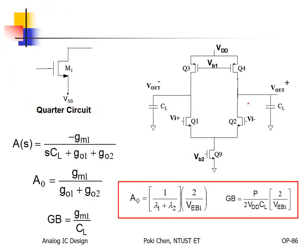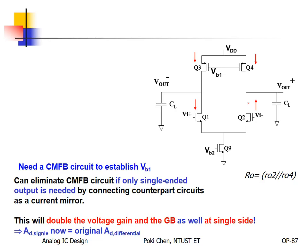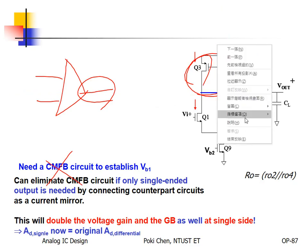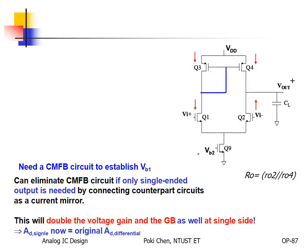That is for the differential output. If you are not interested, if you only need a traditional single-ended output, then we can apply self-biasing by diode connection. The diode-connected transistor will help you stabilize the output common mode voltage. But for such a diode connection, you need to pay for it because there is only one output.